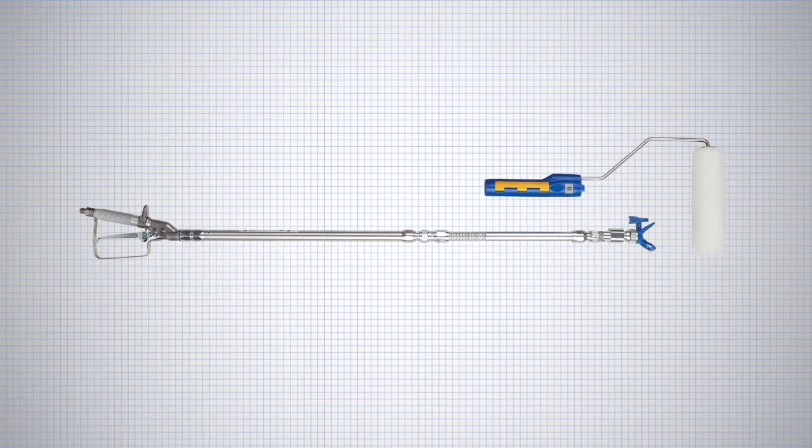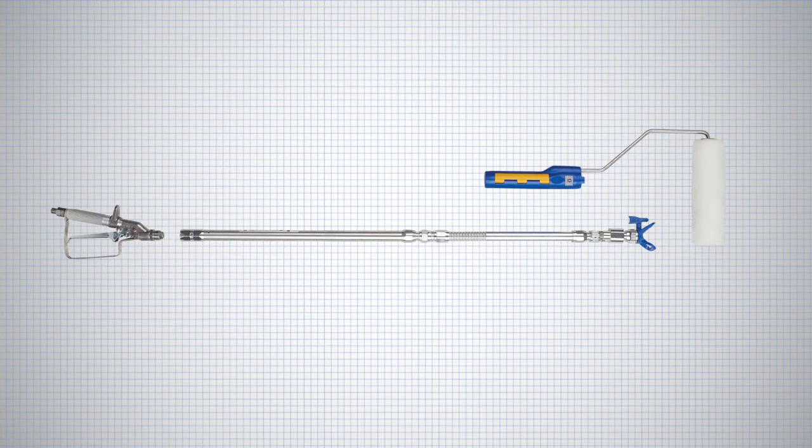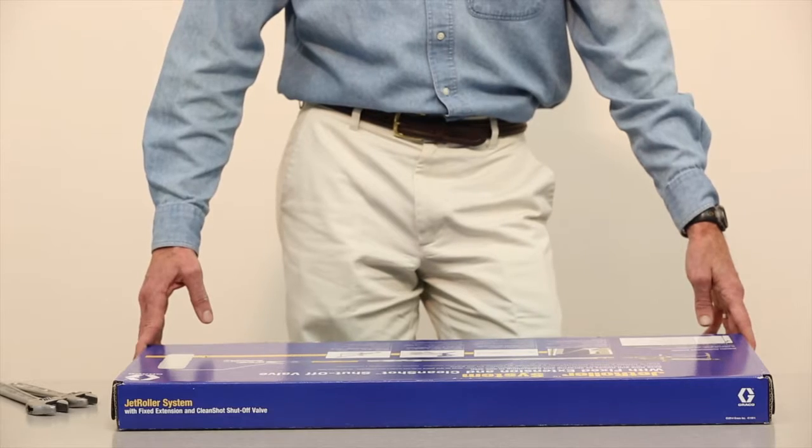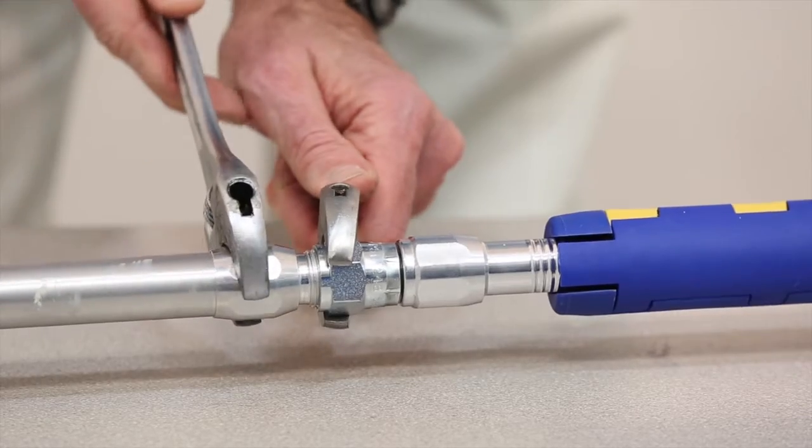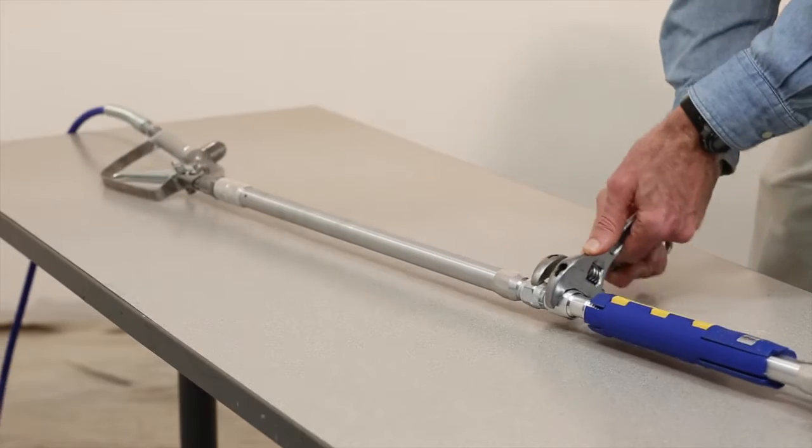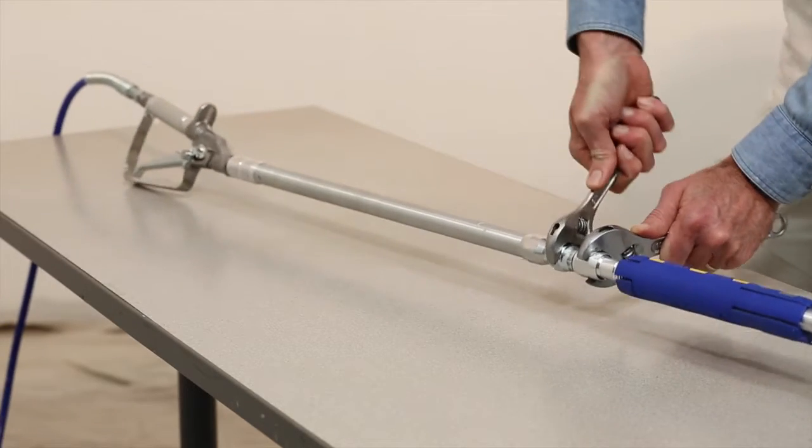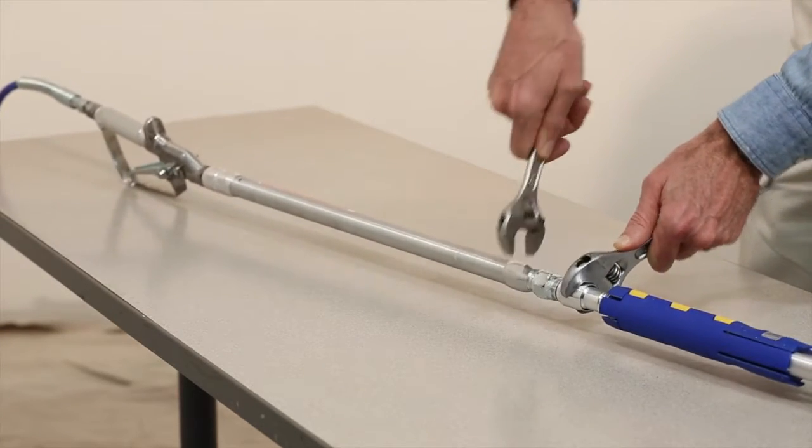The Jet Roller is uniquely designed as three tools in one. It's easy to set up right out of the box. Just connect the two extensions, tighten the fittings with two wrenches, then adjust the extension at the swivel to align the handle to a comfortable position with the roller head.